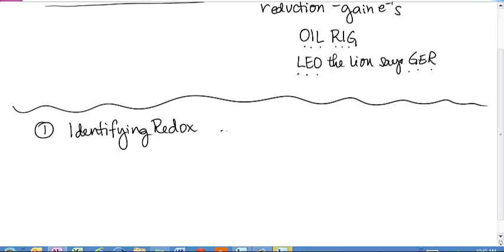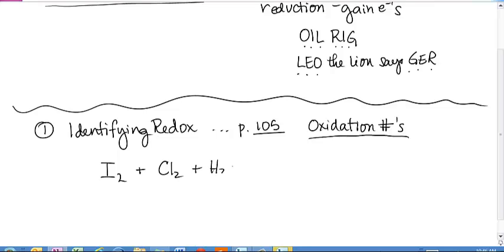I'm going to remind you about what you read on page 105 in your textbook about oxidation numbers. Oxidation numbers are a way of us keeping track of electrons. So, I'm just going to use an example reaction here, so we can identify who's being oxidized and who's being reduced. If I have the reaction I2 + Cl2 + H2O yields HIO3, iodic acid, and HCl.